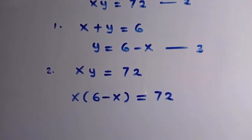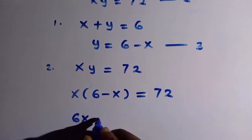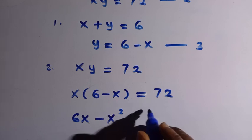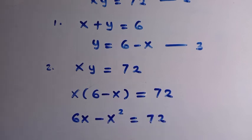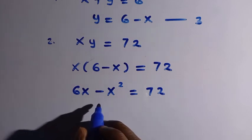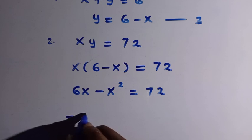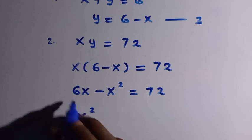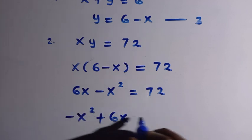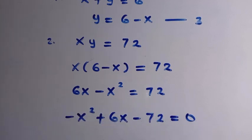Let's open the bracket. So x times 6 gives 6x, minus x times x gives x squared, equals 72. By rearranging this — since it's a quadratic — we have minus x squared plus 6x, then transfer 72 to this side, so minus 72 equals 0.